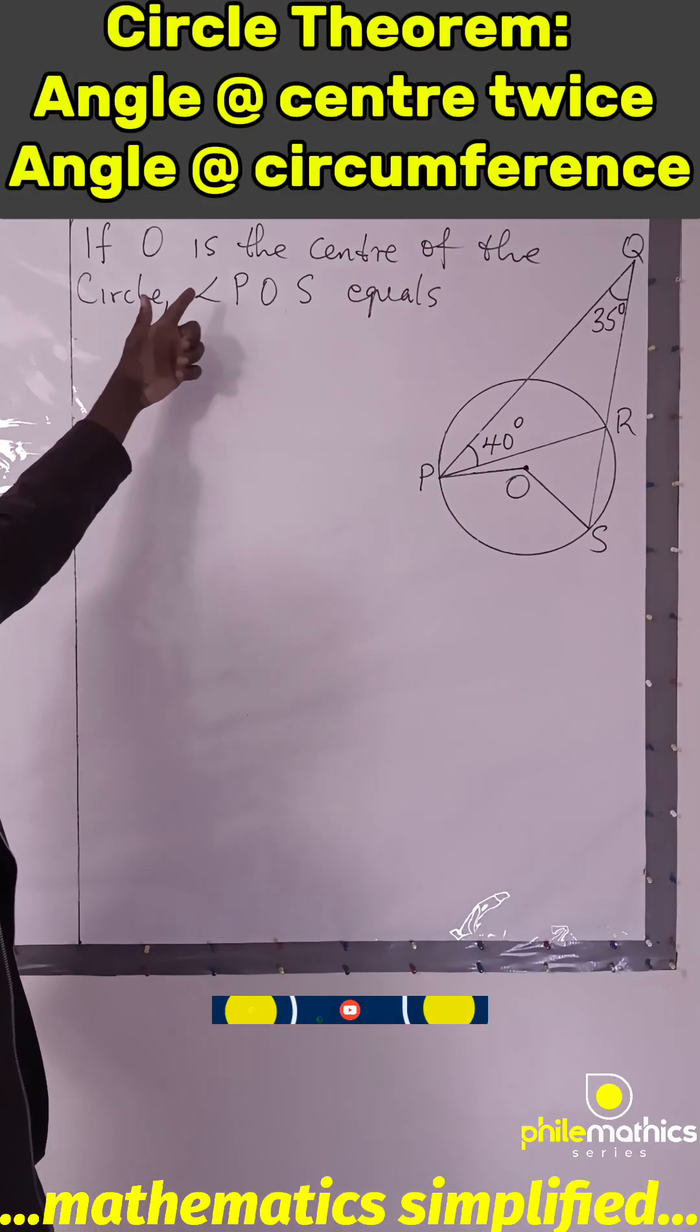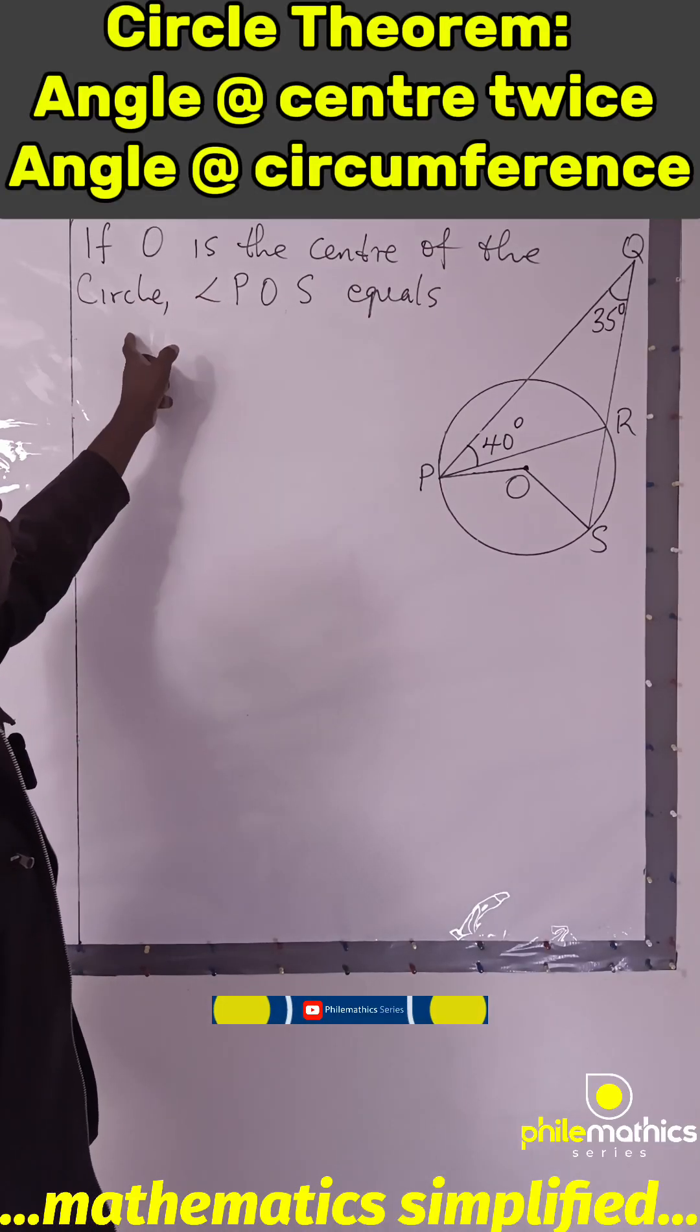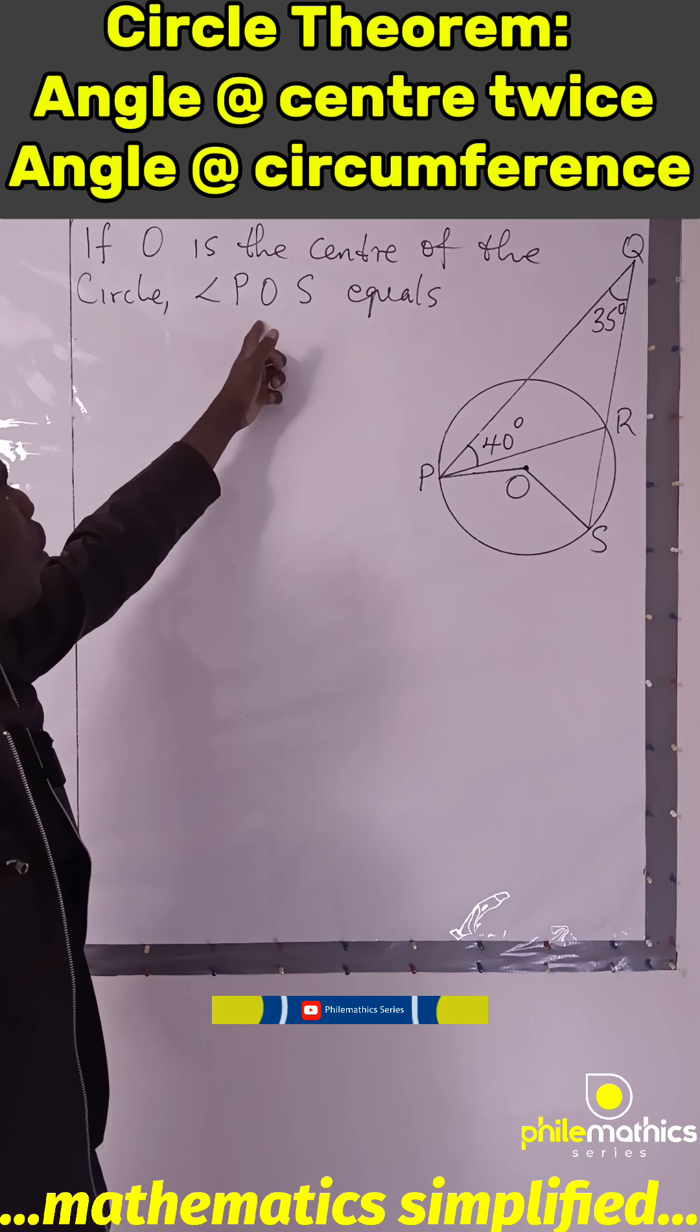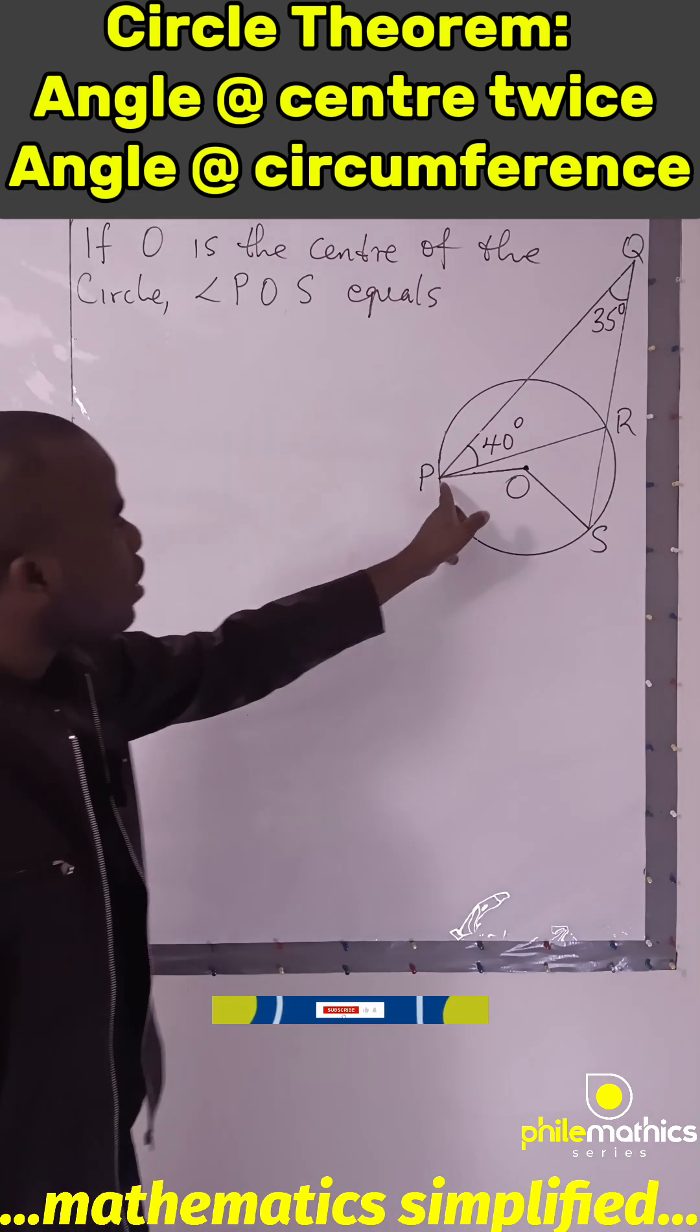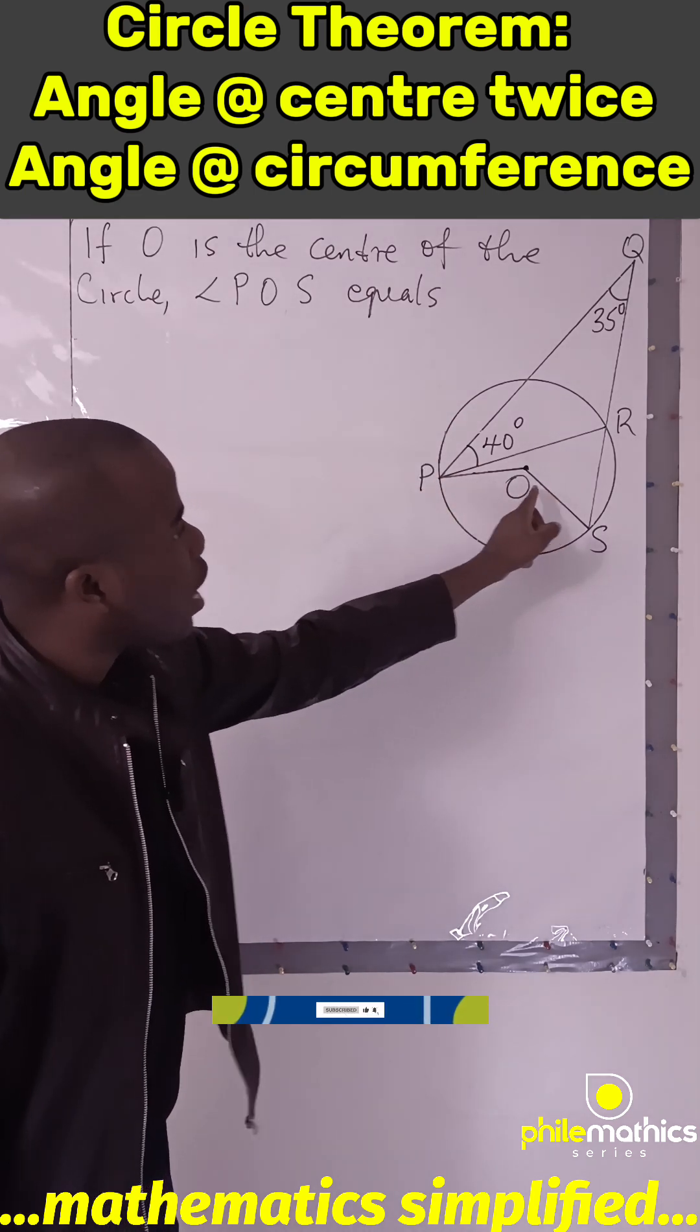This question says, if O is the center of the circle, angle POS equals what? What is this angle POS? This angle.